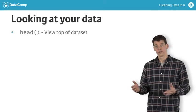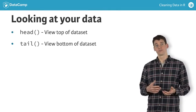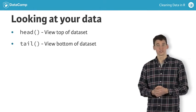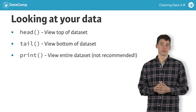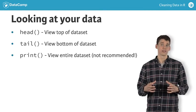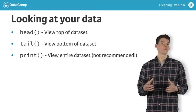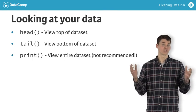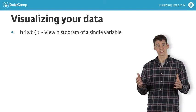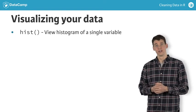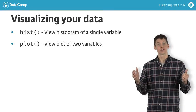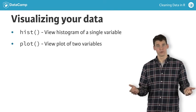To review, head and tail can be used to view the top and bottom of your data respectively. Of course, you can also just print your data to the console, which may be okay when working with small data sets like lunch, but it's definitely not recommended when working with much larger data sets. Lastly, hist will show you a histogram of a single variable and plot can be used to produce a scatter plot, showing the relationship between two variables.